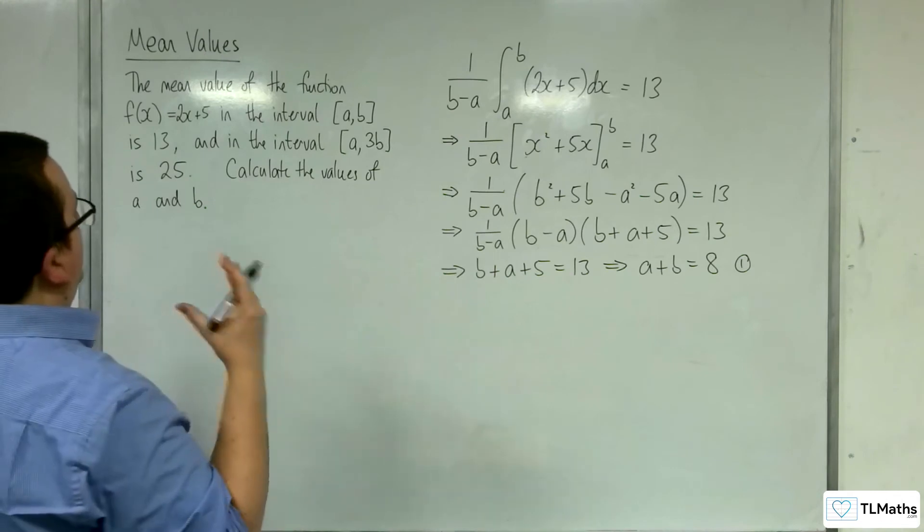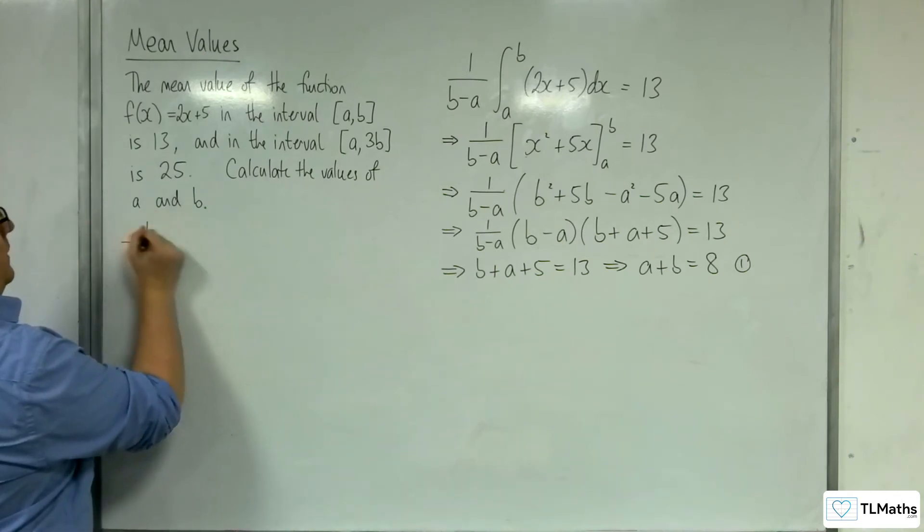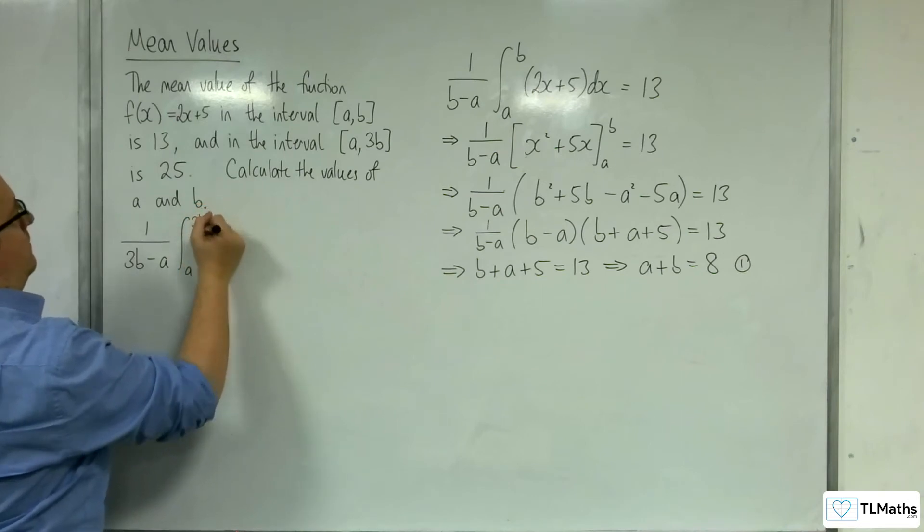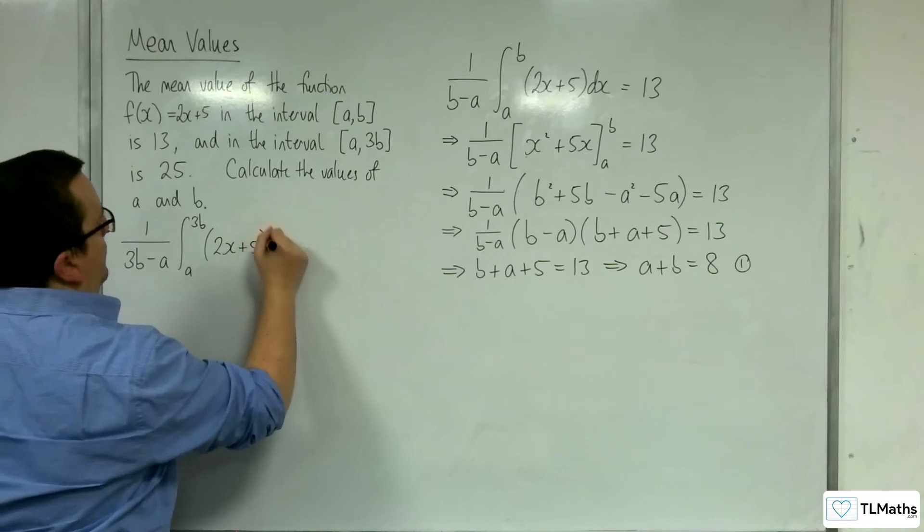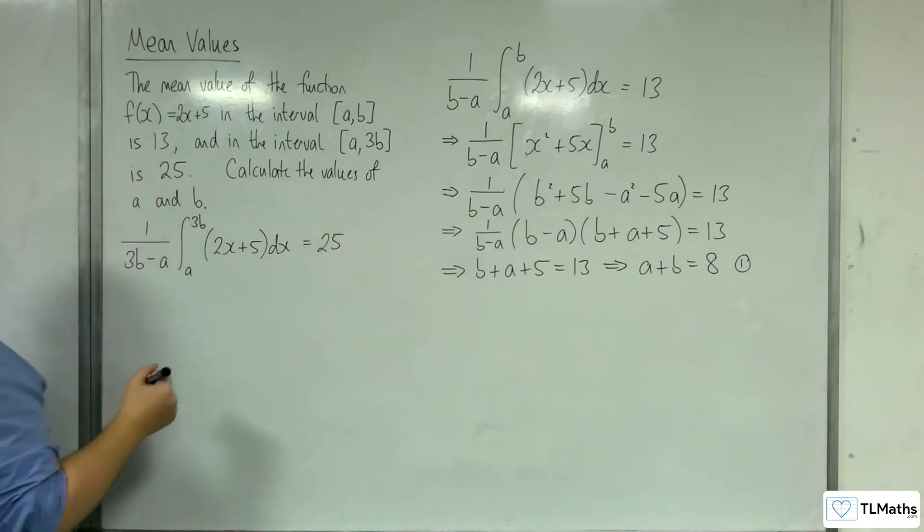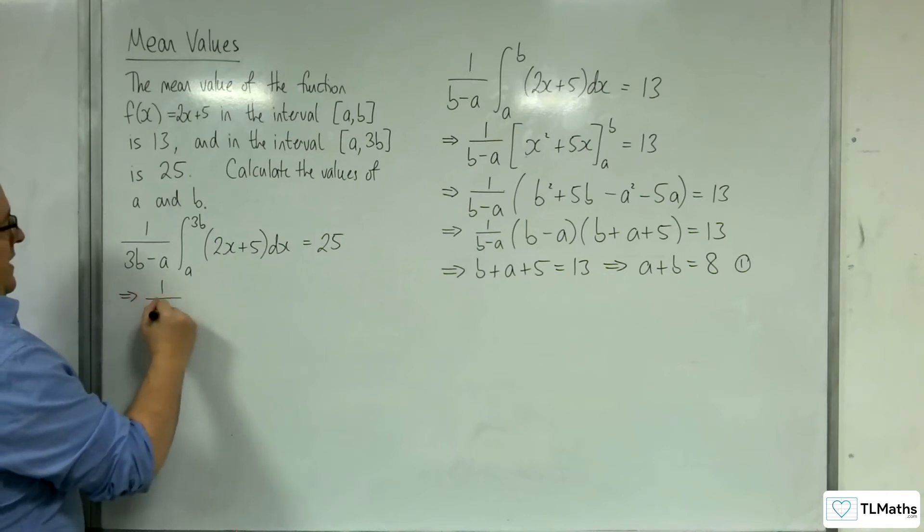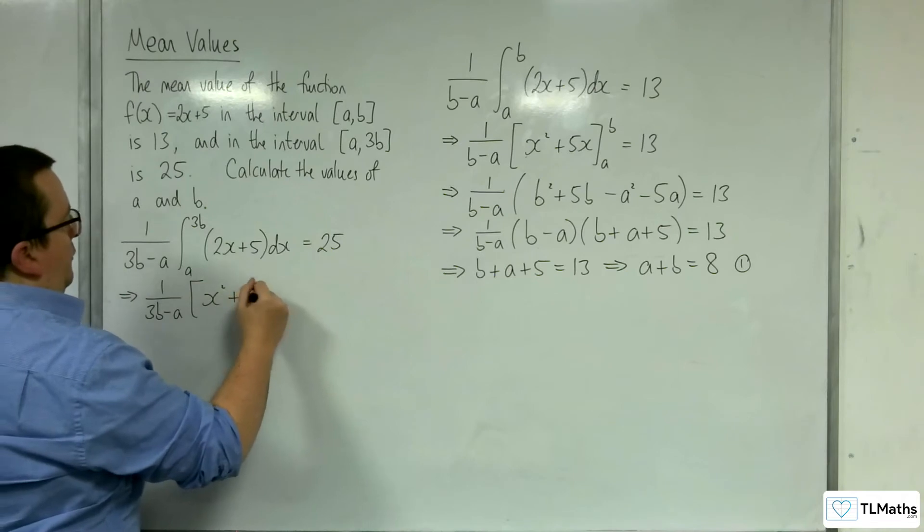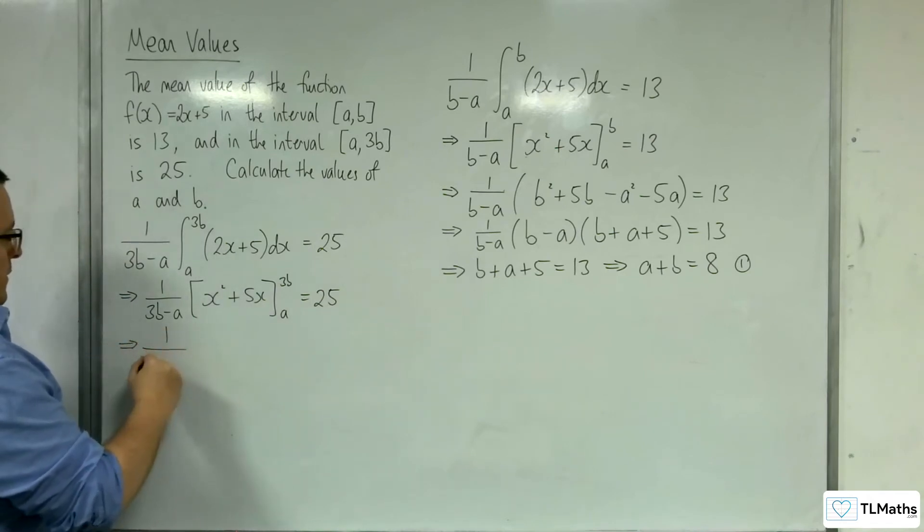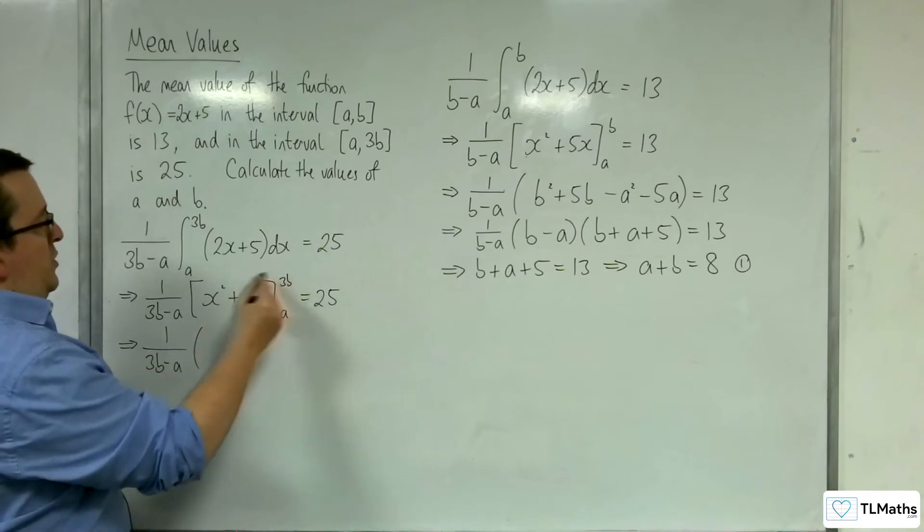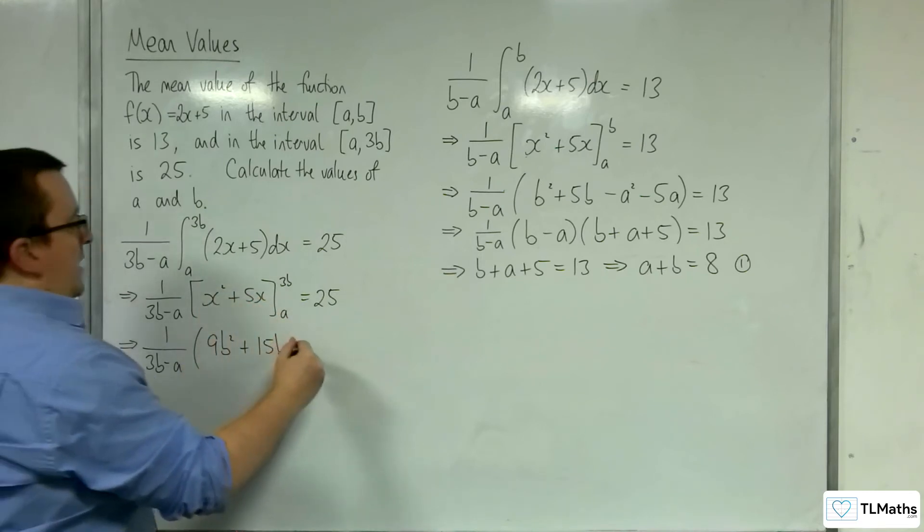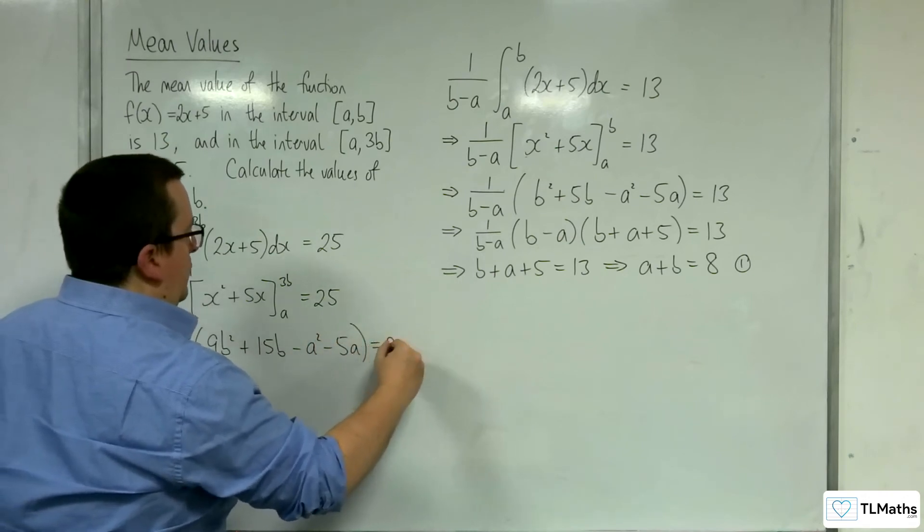Now let's see if I can do a similar job with the other bit of information. So we know that the mean value is 1 over (3b - a) times the integral between a and 3b of 2x + 5 integrated with respect to x. So I've got 1 over (3b - a) times x² + 5x evaluated between a and 3b, and that's got to be equal to 25. So 1 over (3b - a) times, substituting the 3b, I'm going to get 9b² + 15b. Substituting the a, we're going to get minus a² minus 5a is equal to 25.